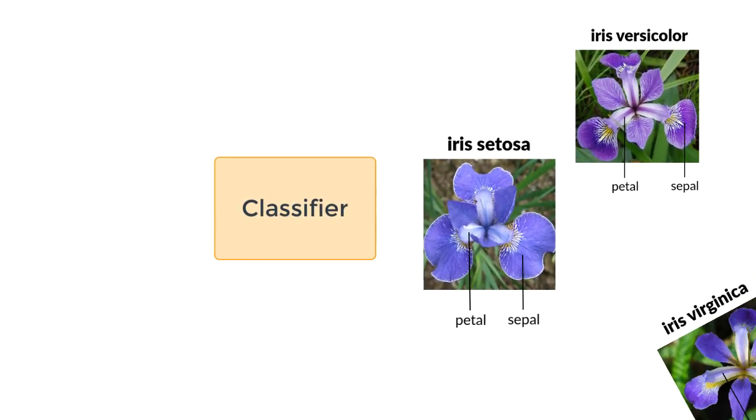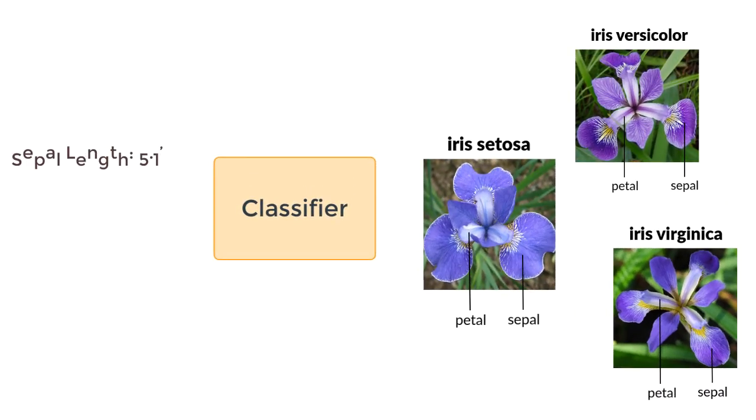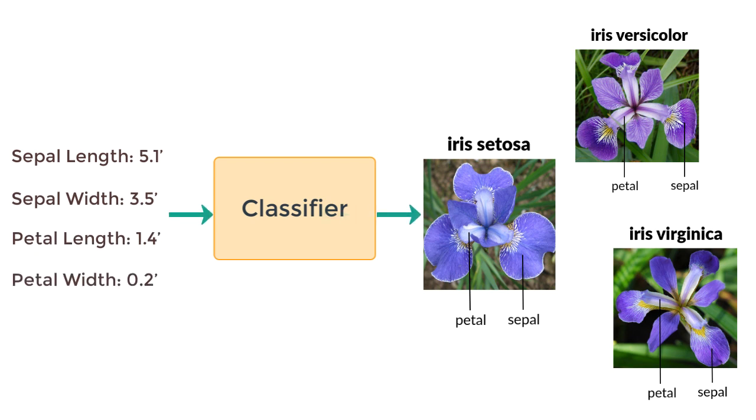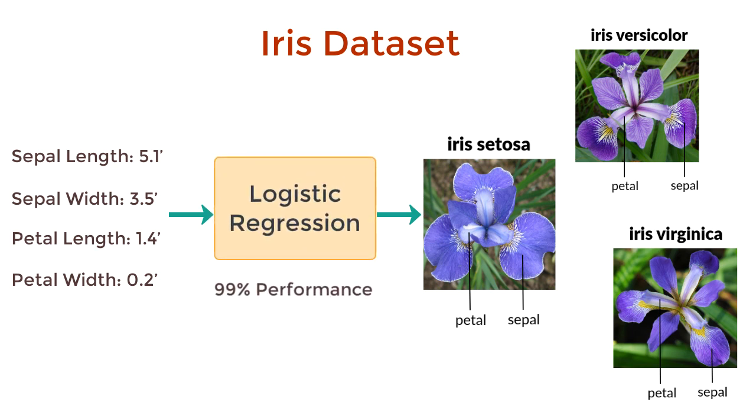Consider the simple problem of classifying a flower into its correct category based on some four numeric features. This, you may know, is the basis of the iris dataset. And this simple problem can be solved with reasonably low error using something like logistic regression. So for this particular problem, logistic regression is a strong learner. It fits our definition with the thresholds. That is, it is able to learn to model this iris dataset with an error less than some epsilon with a probability greater than some other threshold like 1 minus delta.